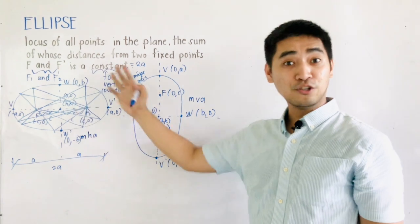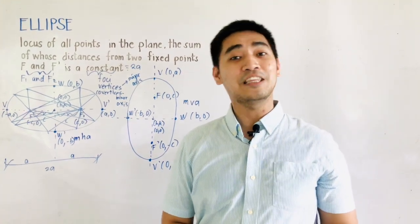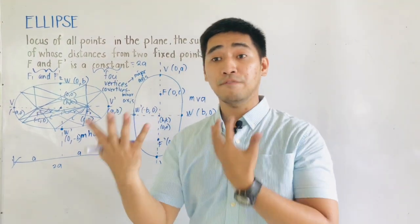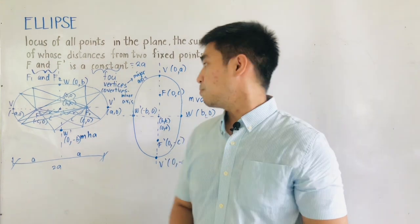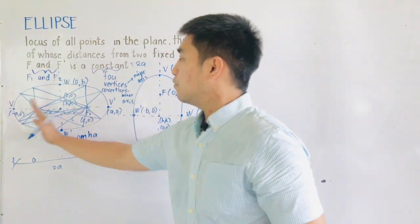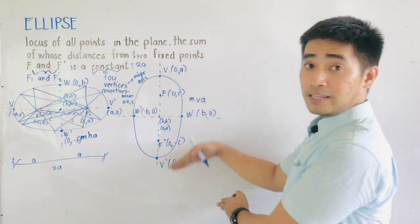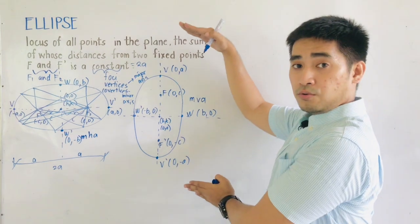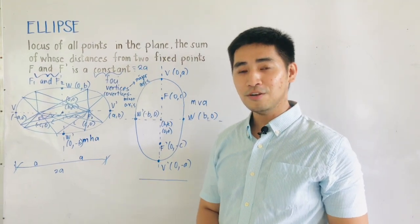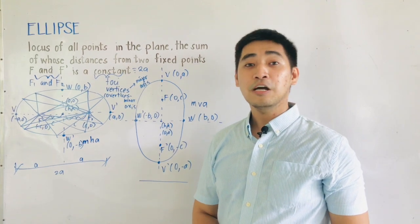That is one major characteristic of an ellipse. A real-life example is the orbits of the planets, which are elliptical in shape — they orbit around an ellipse. To recap: a major horizontal axis means the foci and vertices are along the horizontal axis; a major vertical axis means the ellipse extends along the vertical axis. I hope you learned something from this video — don't forget to like, subscribe, and comment. Mathematics is always fun. Goodbye and God bless.